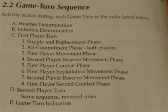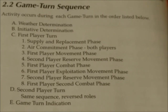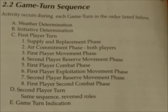Continuing the first player turn: 4. Second player reserve movement phase, 5. First player combat phase, 6. First player exploitation movement phase, 7. Second player reserve movement phase, 8. First player second combat phase. Then D: The second player turn, same sequence with reversed roles. And E: Game turn indication.